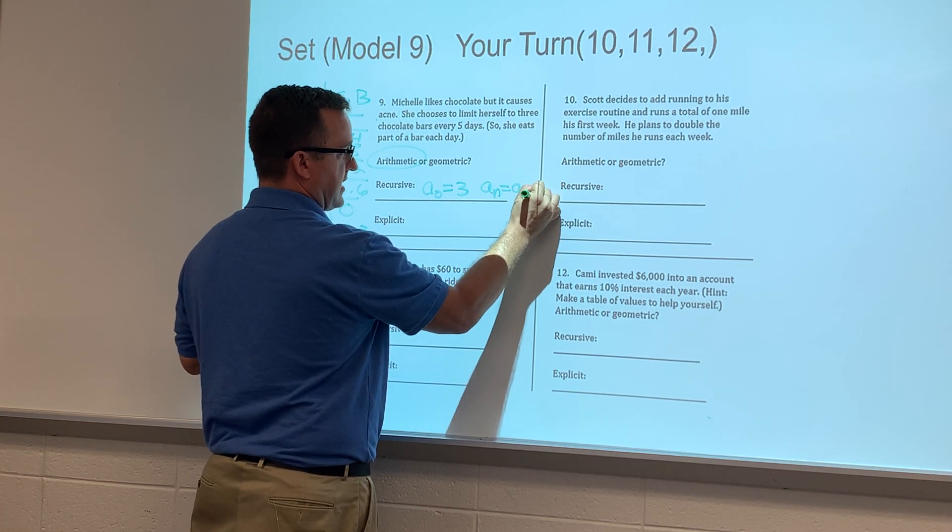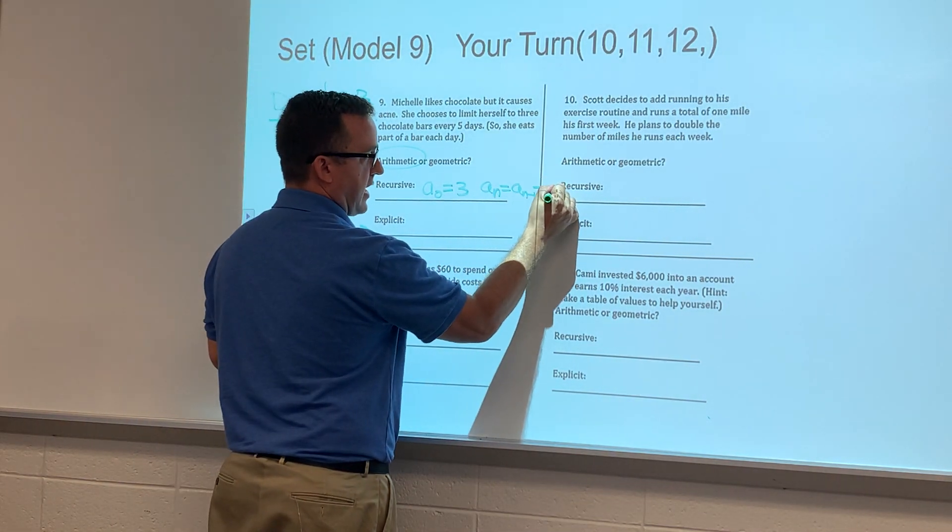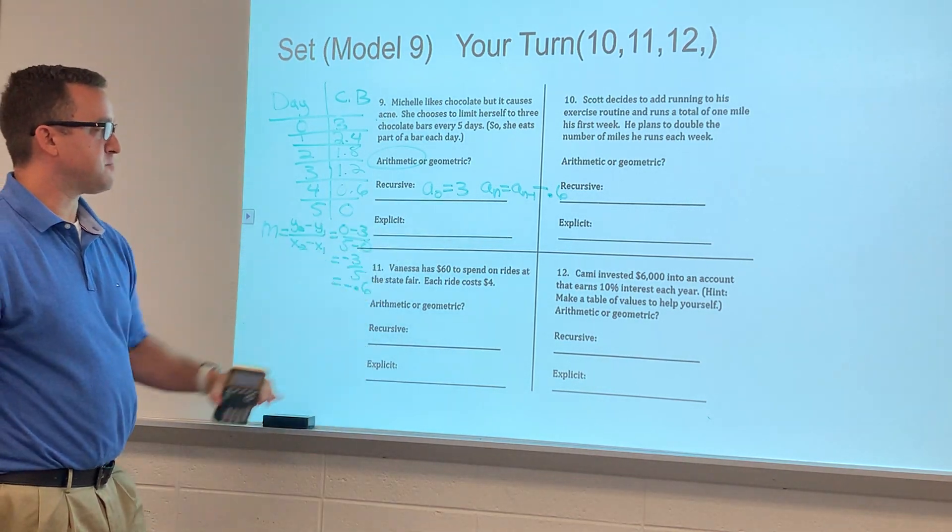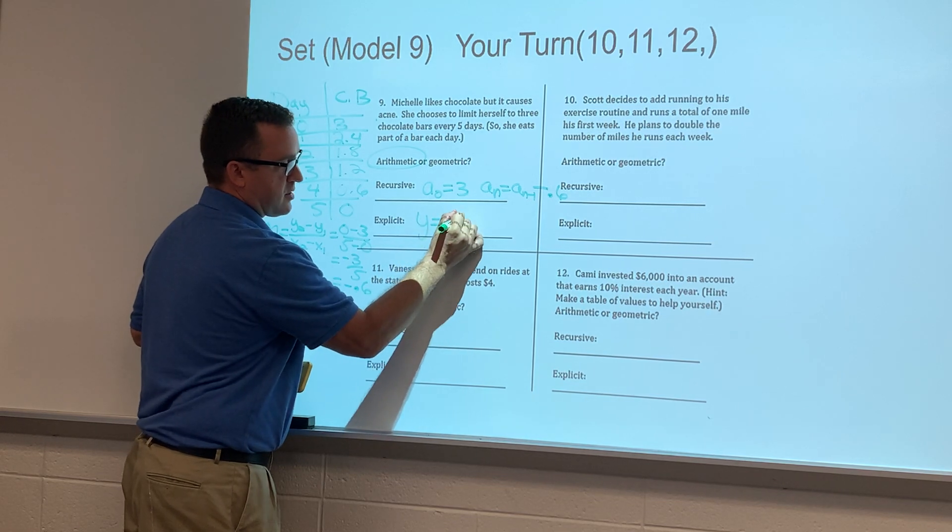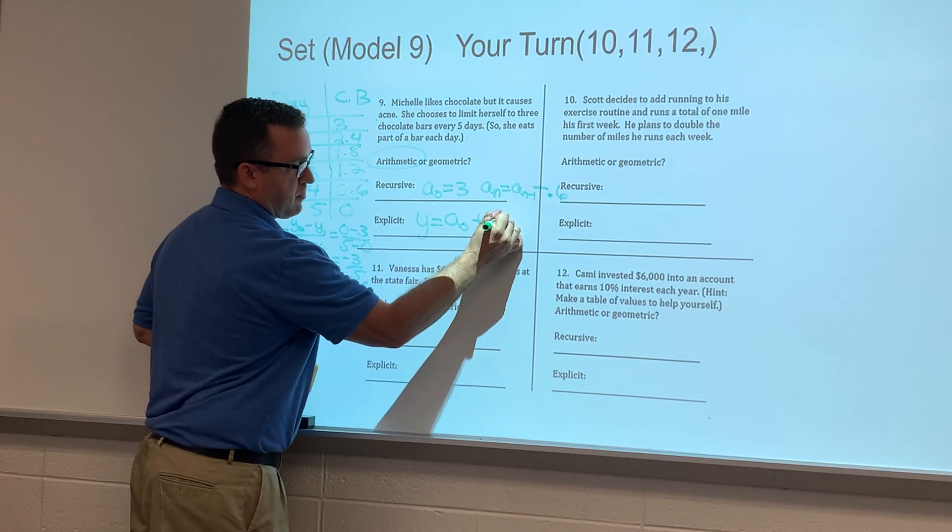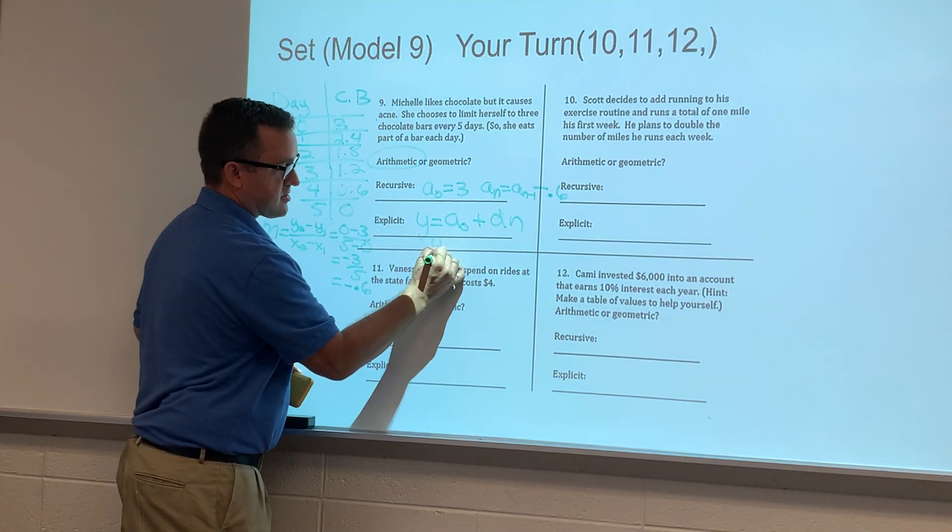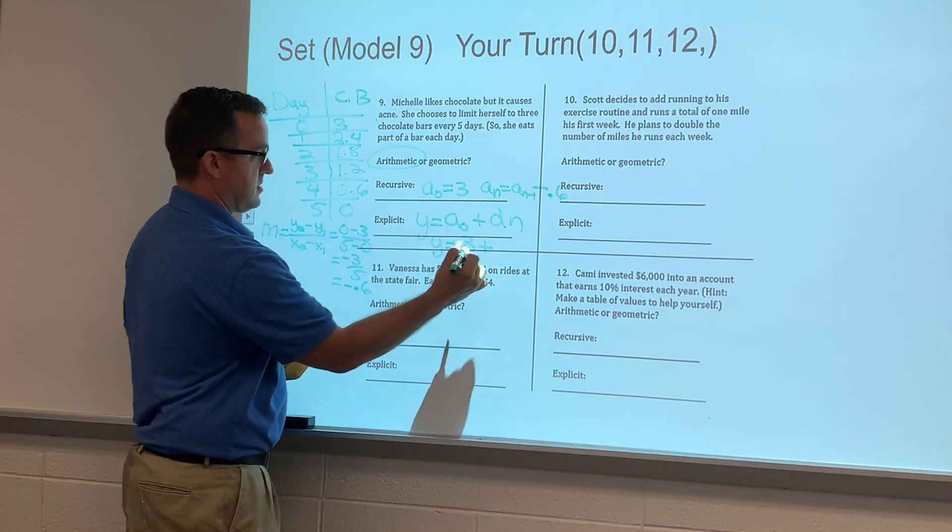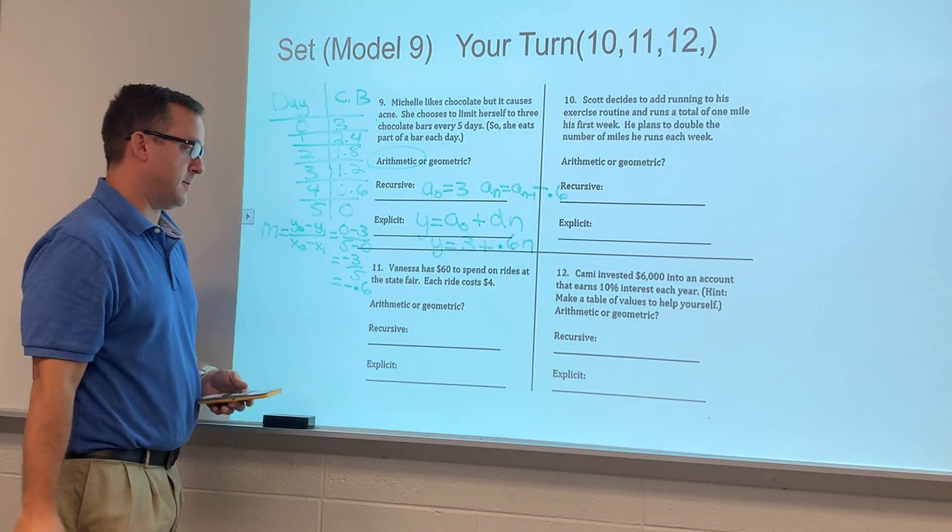Now my explicit equation, if I start at the zero term, is y equals a sub zero plus d times n. So a sub zero here is three, so y equals three plus 0.6 times n.